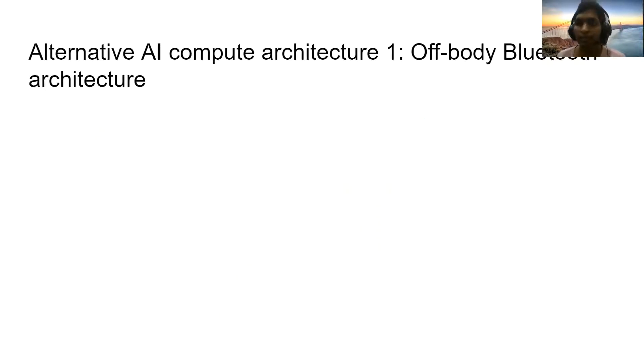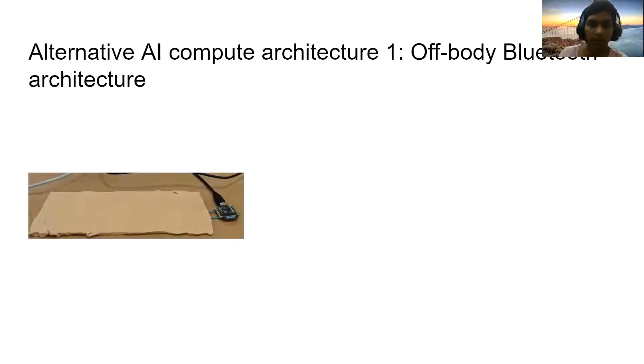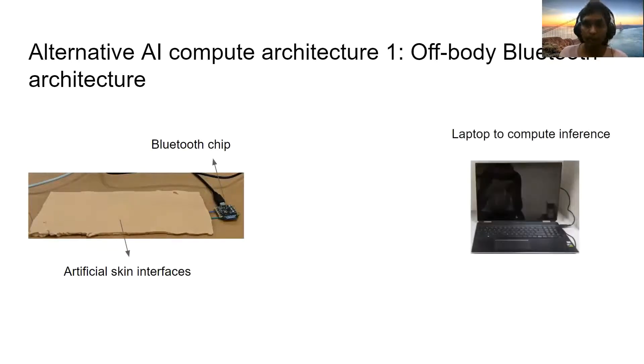Let us have a look at alternative AI compute architectures that can be used with wearable artificial skin interfaces. The first one that comes to our mind is off-body Bluetooth architecture in which an artificial skin interface is connected to a Bluetooth chip and the inferences are computed on a laptop.